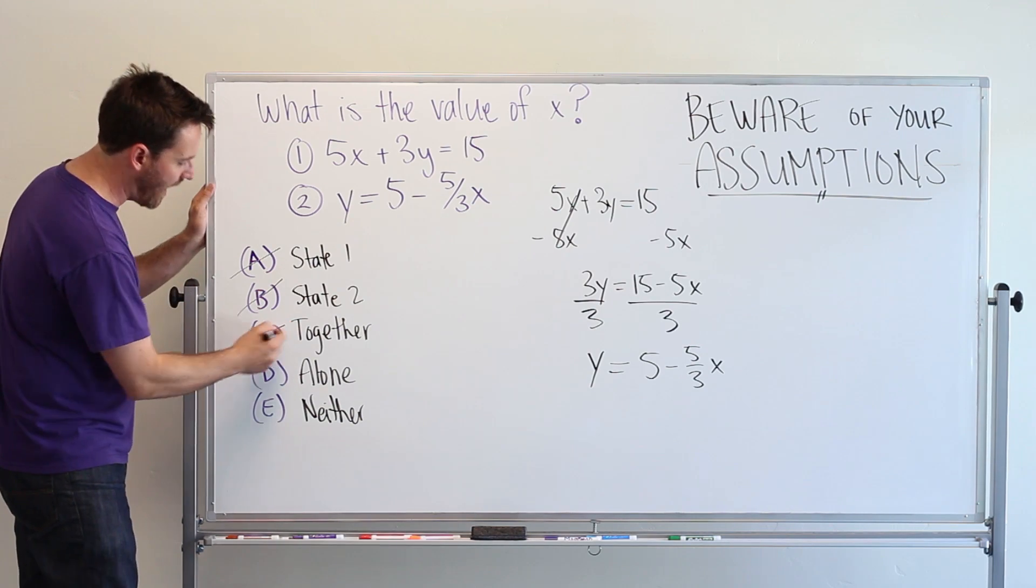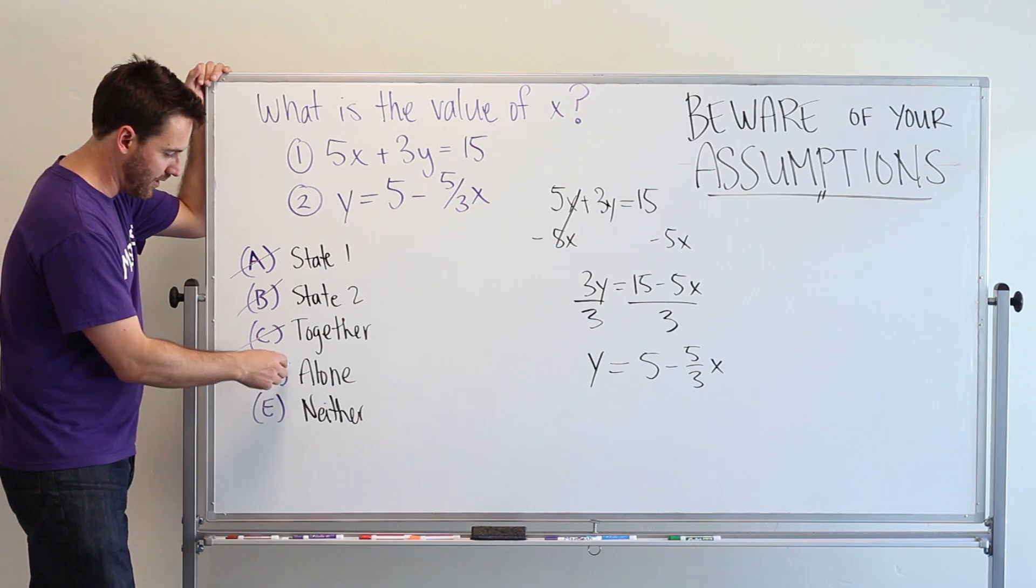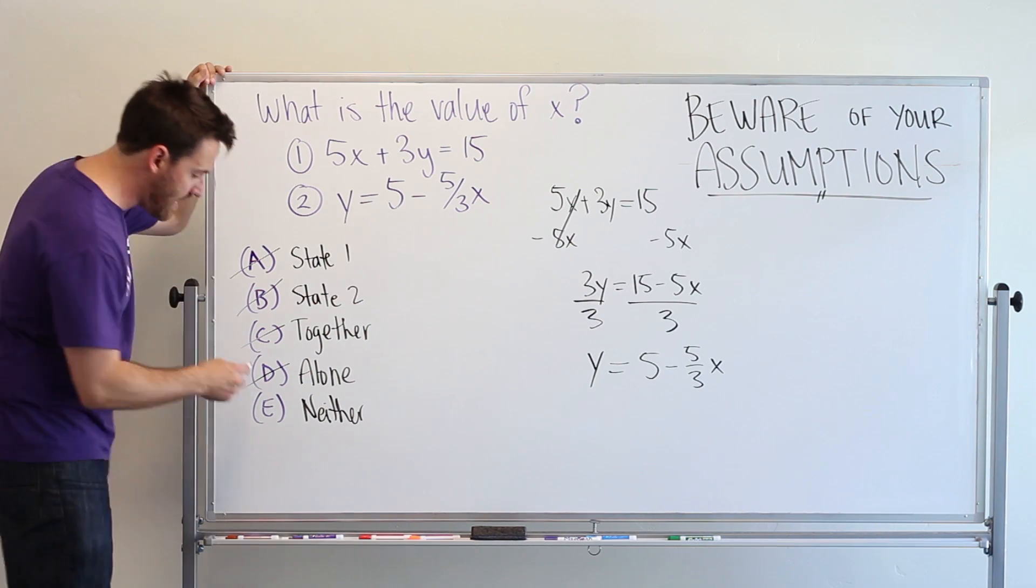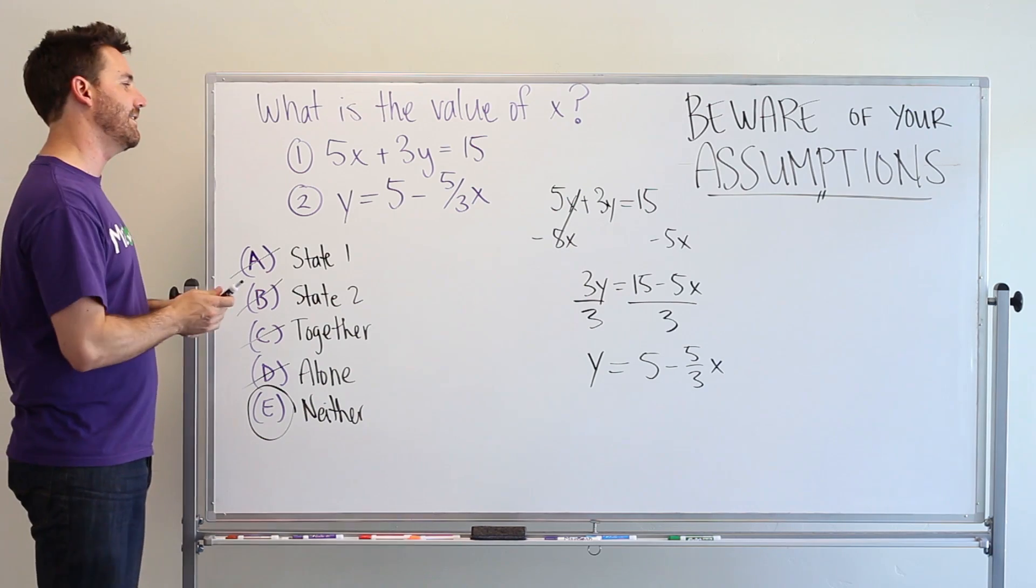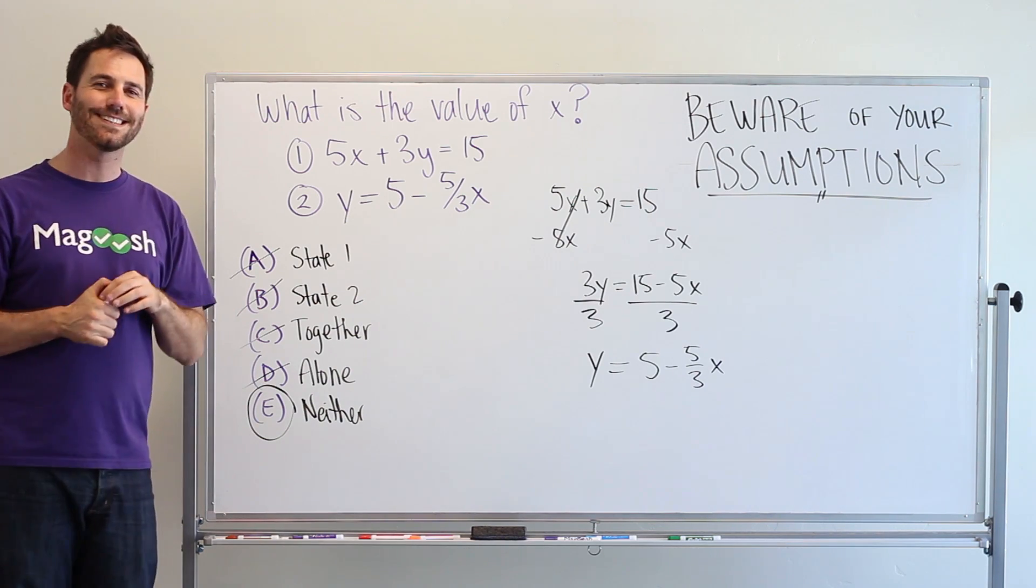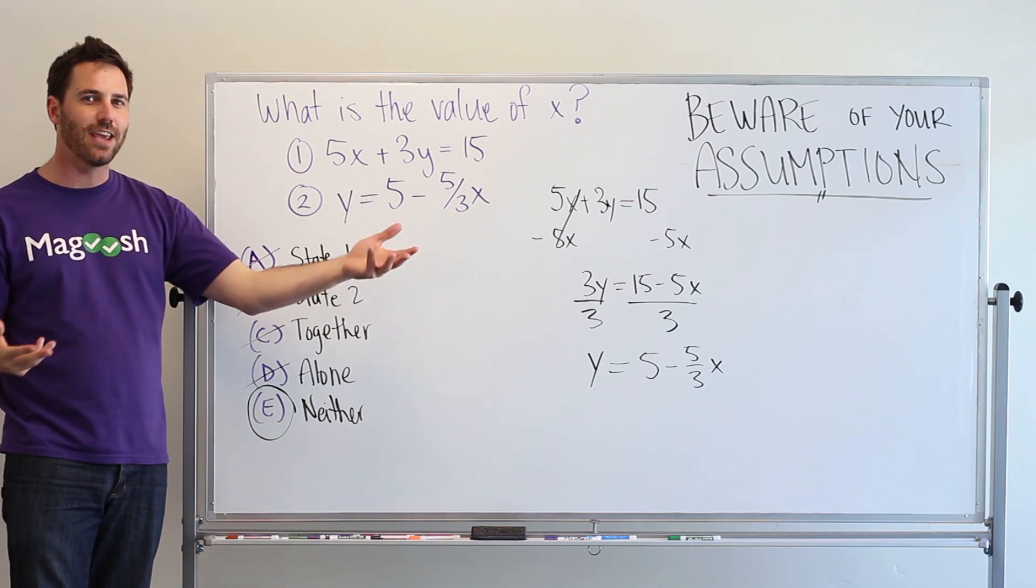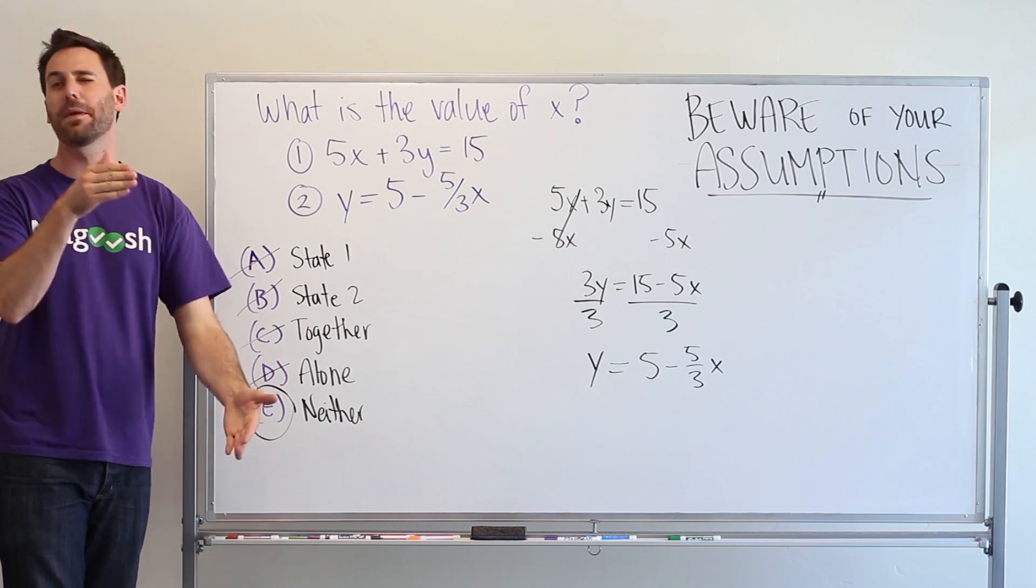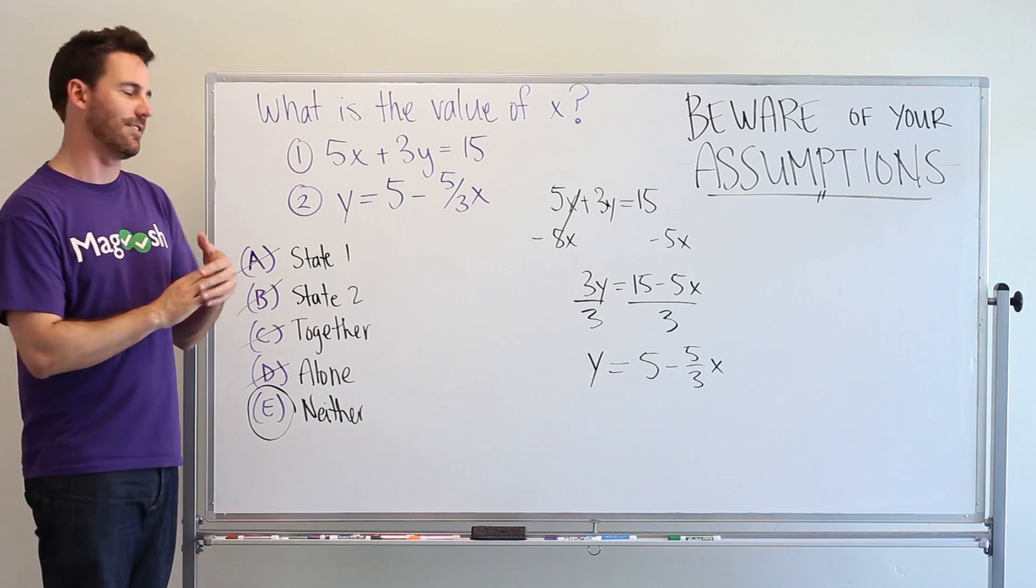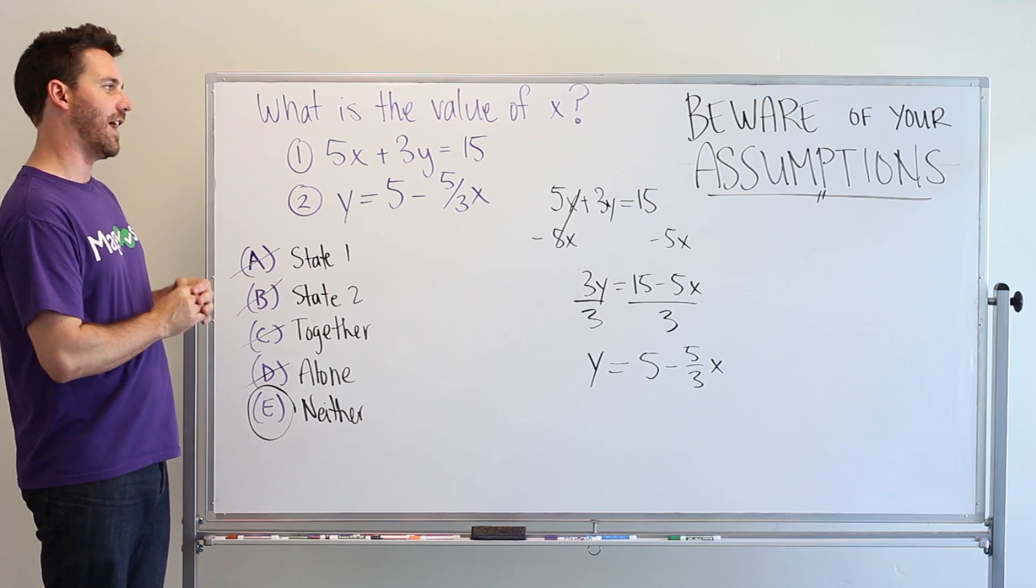So, you're not actually getting two different linear equations. You have the same one, just written differently. So, both of these problems together are definitely not going to work. I know because A and B didn't work that D is not correct. And so, E here is the correct answer. So, on the test, beware of your assumptions. Don't let them lead you to taking a shortcut to the wrong answer.